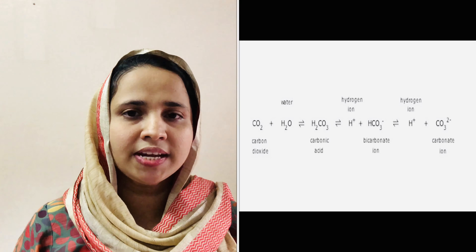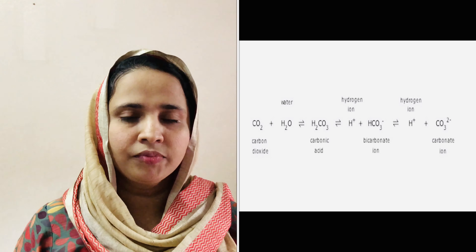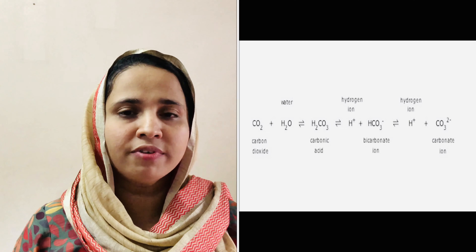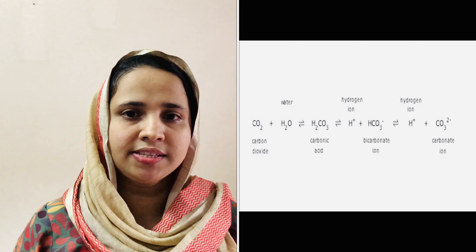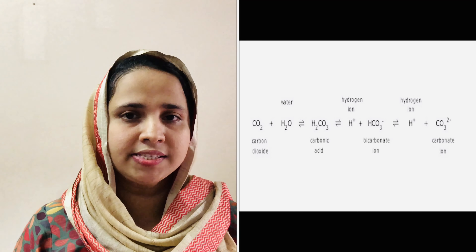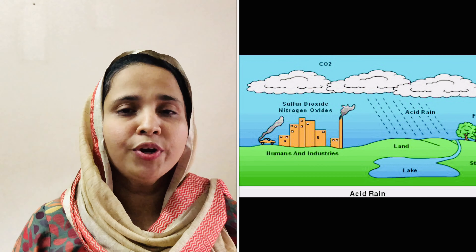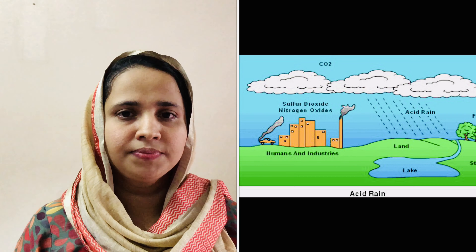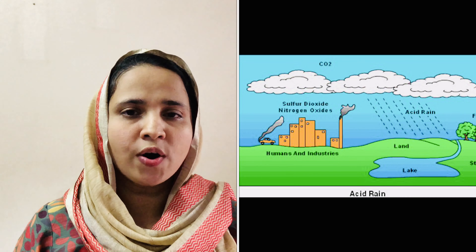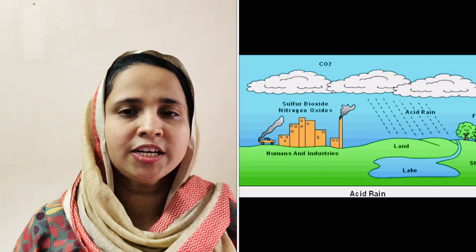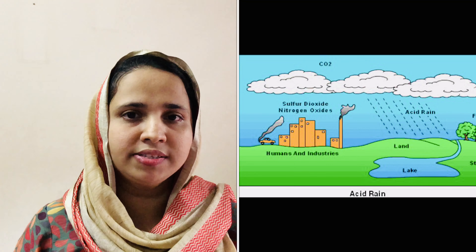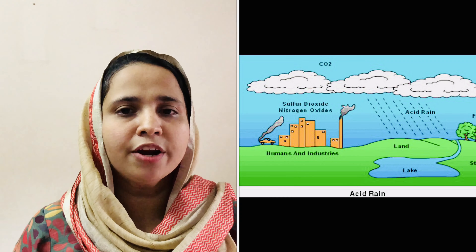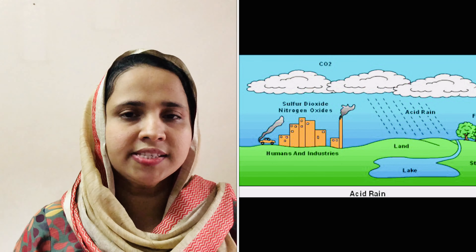This H⁺ ion is responsible for the acidity of rainwater. When nitrogen oxides and sulfur oxides are present, they cause the pH of rainwater to drop below 5.6, and it is called acid rain. Tremendous amounts of nitrogen oxides and sulfur oxides are released into the atmosphere as a result of the combustion of fossil fuels, and these pollutants are converted into nitric acid and sulfuric acid.